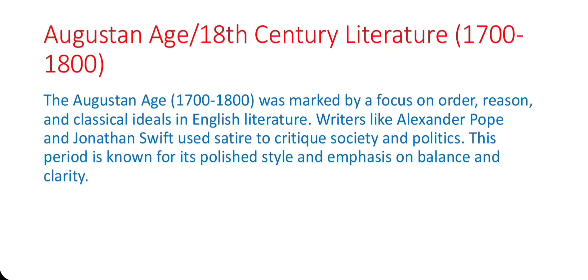The 18th century, known as the Augustan Age from 1700 to 1800, saw literature become more refined and polished, emulating the classical ideals of ancient Rome. This period was marked by the rise of satire, with writers like Alexander Pope and Jonathan Swift. Pope's The Rape of the Lock and Swift's Gulliver's Travels are quintessential works of this era, blending wit with social commentary.